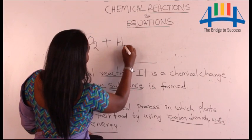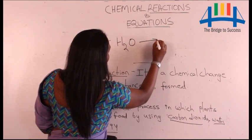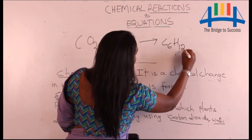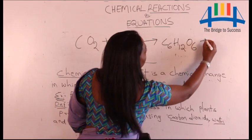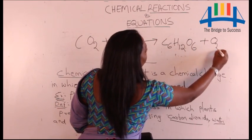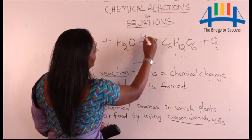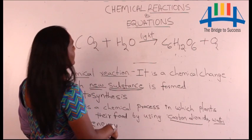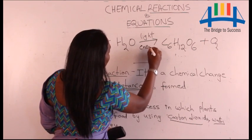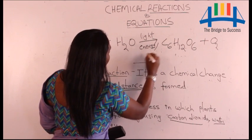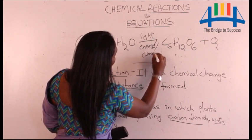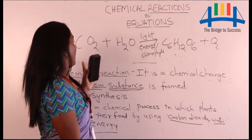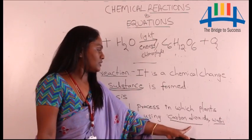Carbon dioxide and water, with light energy as a condition, gives us food — that is C₆H₁₂O₆ — plus oxygen. The conditions required are written on the arrow mark: carbon dioxide, water, and light energy on the left, and on the arrow I am writing light energy and chlorophyll.